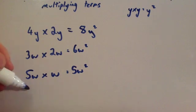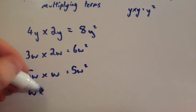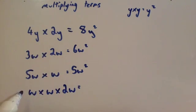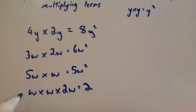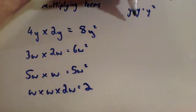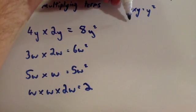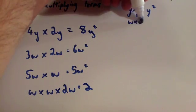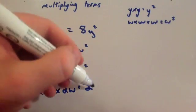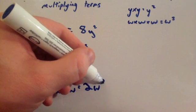If you had w times w times 2w, multiply the numbers in front: 1 times 1 times 2 is 2. Remember, if there's no number in front, there's technically a 1 there because w is the same as 1w. And w times w times w — from the indices video — that would be w cubed. So the answer is 2w cubed.